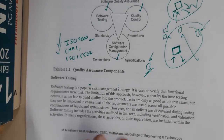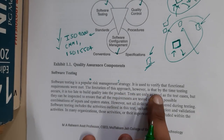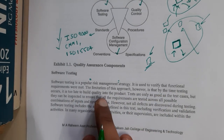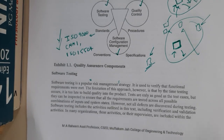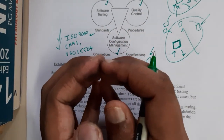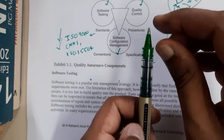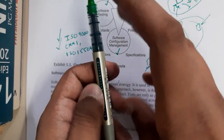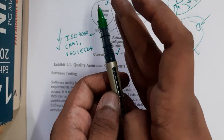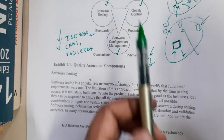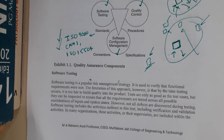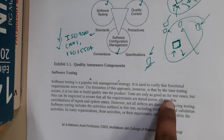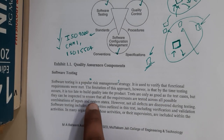The limitation of this approach, however, is that by the time testing occurs it may be too late to build quality into the product. Testing is done once some modules are built — you cannot write a small function and test it again and again, as that would take a long time. So testing is done once part of the product is done, which is also a drawback because it is a bit late.